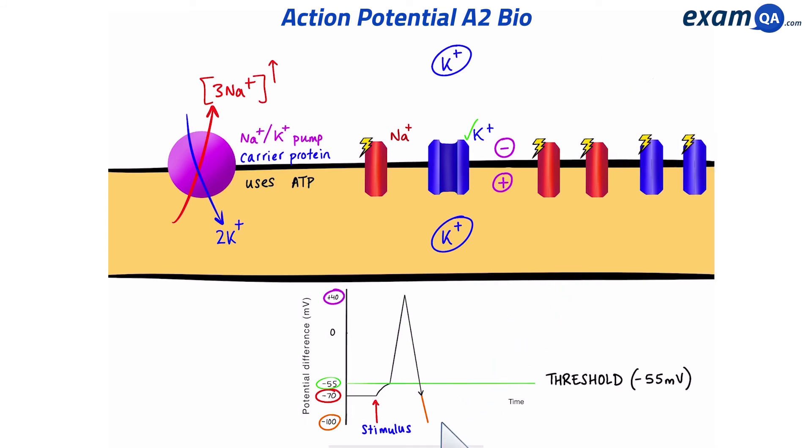Eventually, the voltage-gated potassium channels close, and the neuron goes back to resting membrane potential, minus 70 millivolts.